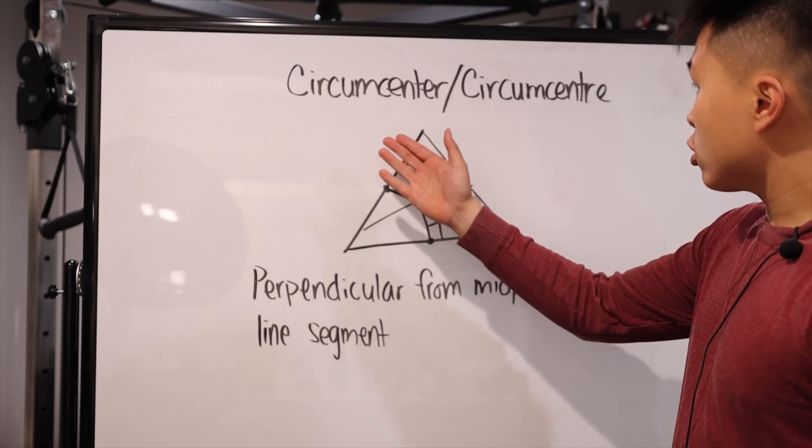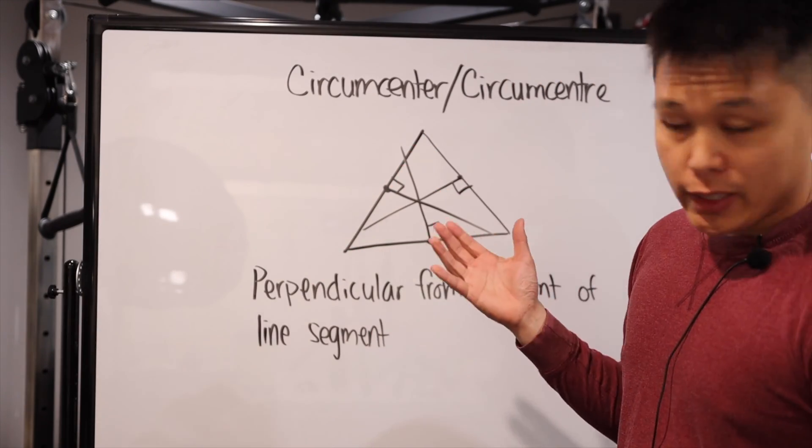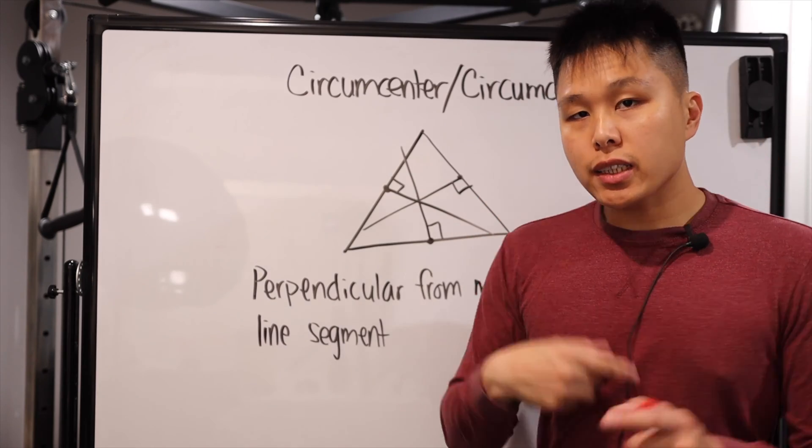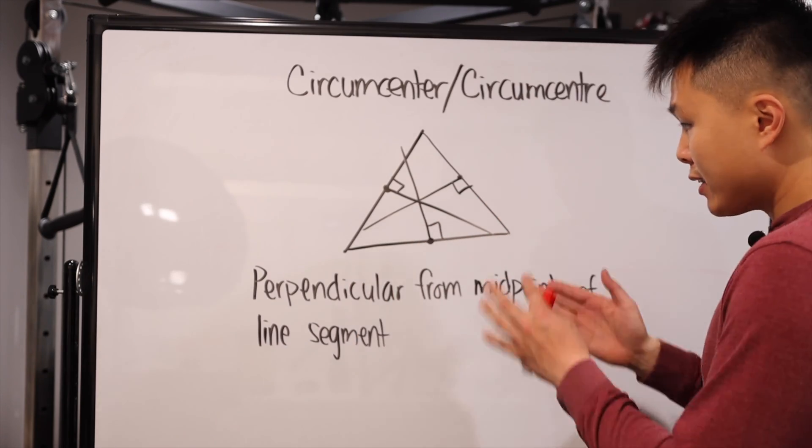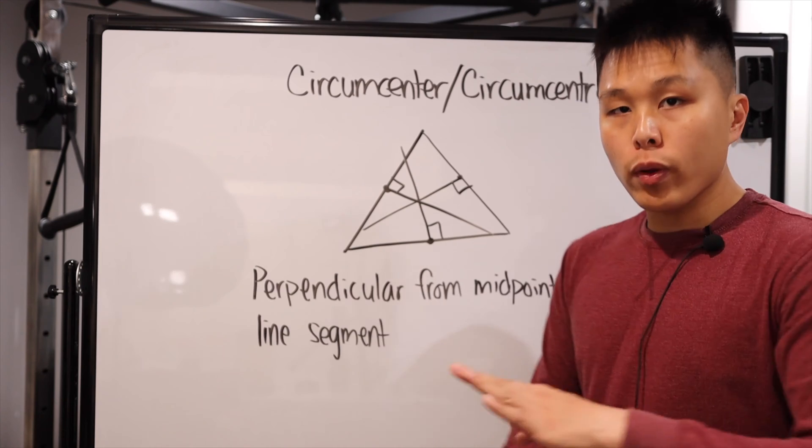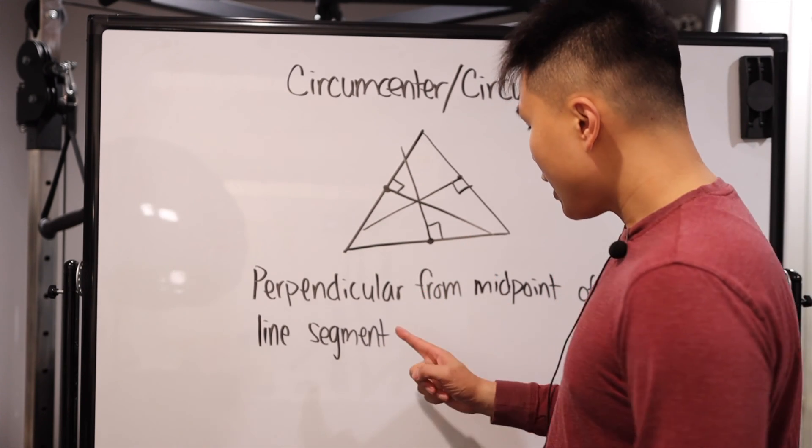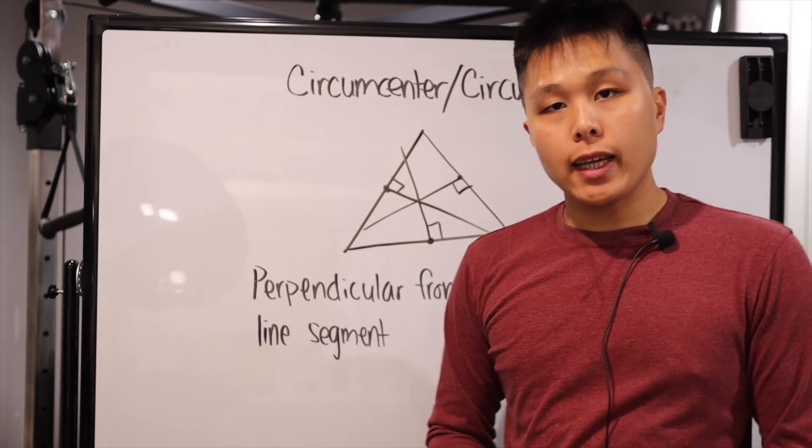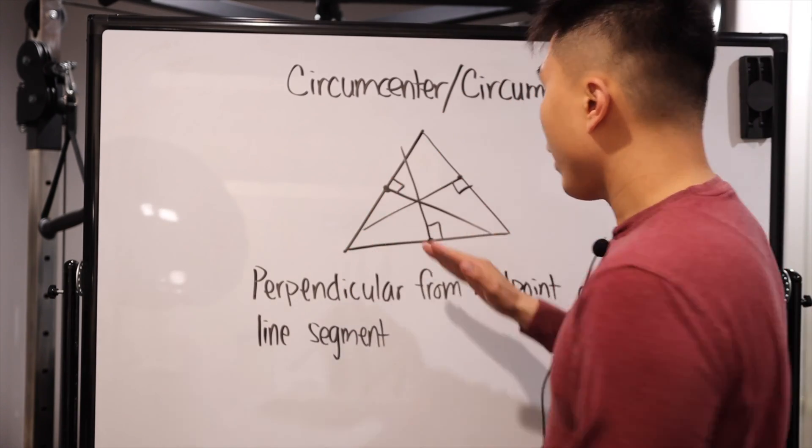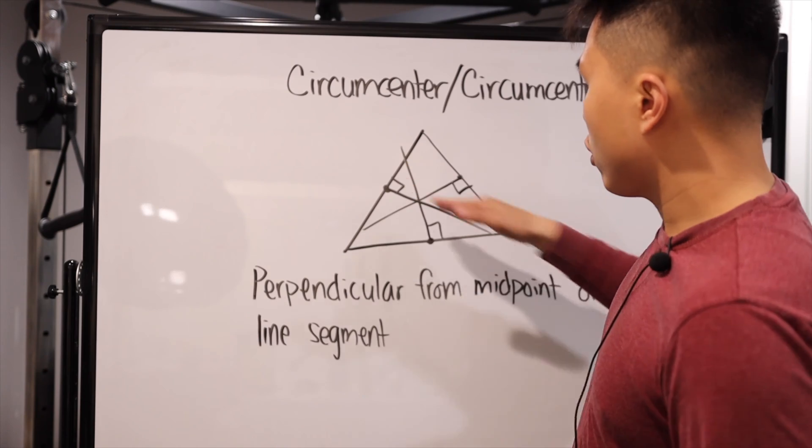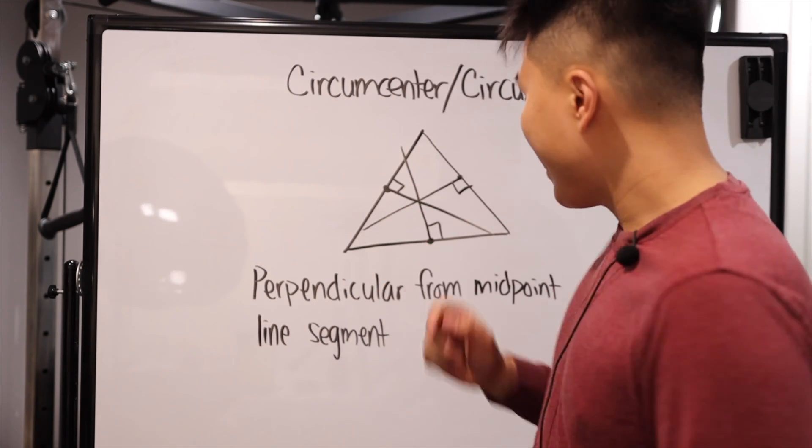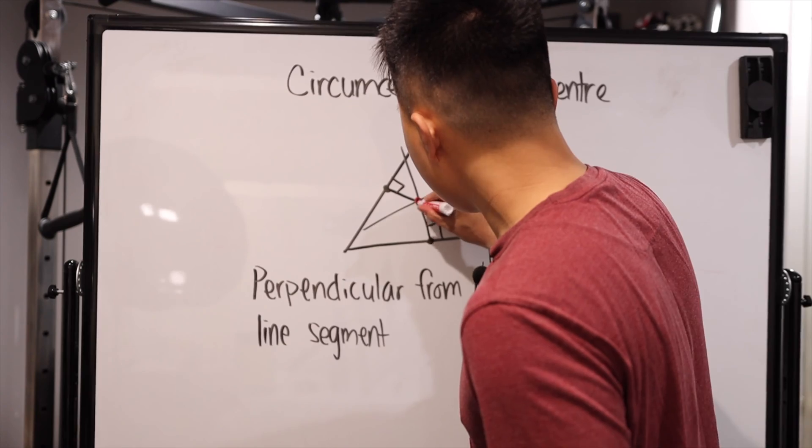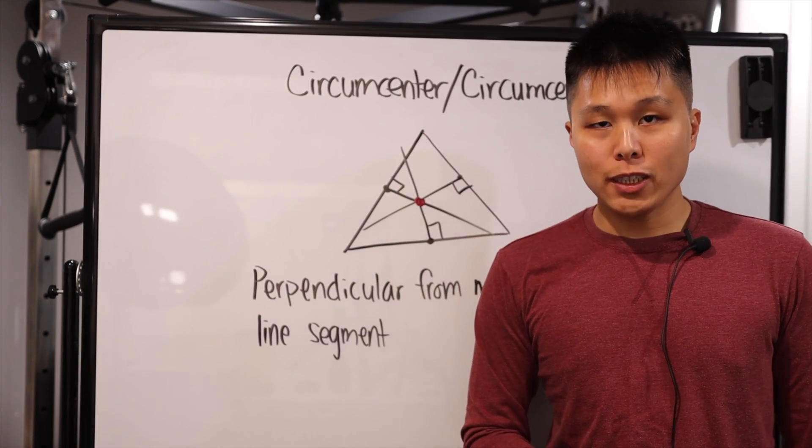All right, so the second one is circumcenter. Now, spelled both ways again. This one is slightly different from the first one. The second one has nothing to do with the vertices now. Now, what it does is that it gets the midpoint of every line segment in the triangle, and it draws a perpendicular line from those midpoints, and that intersection right here is known as the circumcenter.